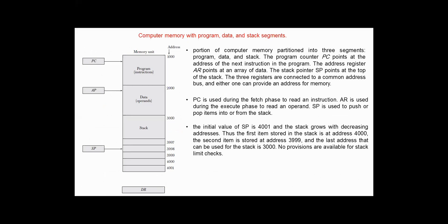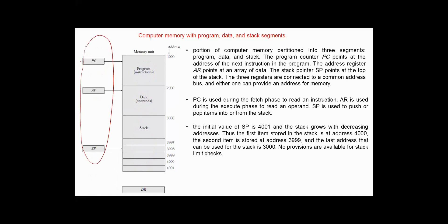When a portion of memory is allocated for the stack, we have three memory segments: program, data, and stack. The program counter holds the address of the next instruction to be executed, the address register is used to retrieve the operand, and the stack pointer points at the top of the stack. These three registers are connected to a common bus and either one can provide an address for memory. The program counter is used during the fetch phase to read an instruction, the address register is used during the execute phase to read an operand, and the stack pointer is used to push or pop items into or from the stack.